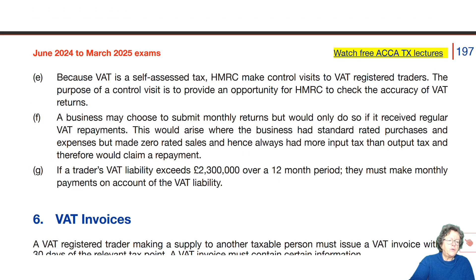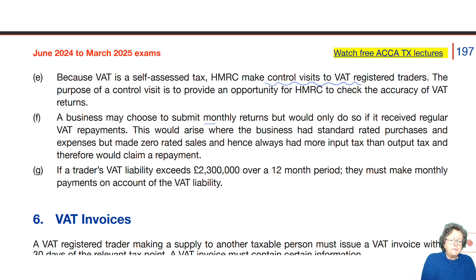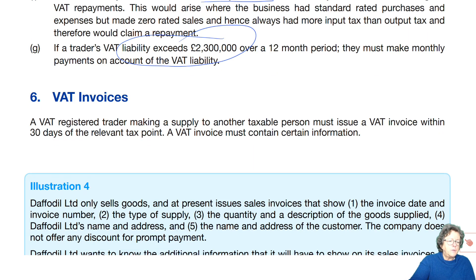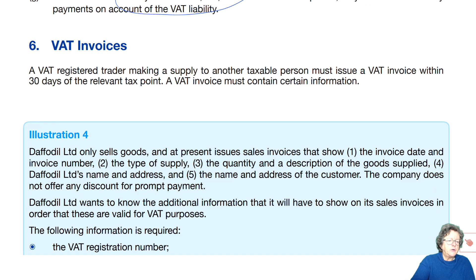Because it's all self-assessed, HMRC makes what are known as control visits to check accuracy, and they do have powers of entry. You can submit monthly returns if you want to, though it's not very common. If your VAT exceeds 2.3 million, you have to make VAT returns once a month. A VAT invoice must look very specific and include certain details — you have to issue it within 30 days.